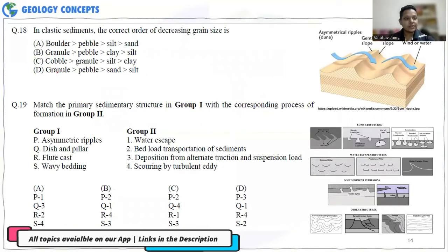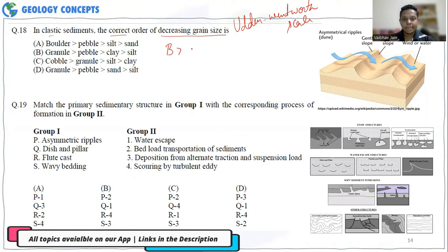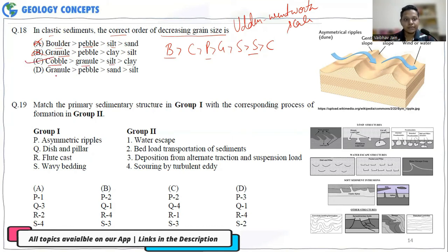The next question asks for the correct order of decreasing grain size in clastic sediments — a direct question from the Udden-Wentworth scale. The correct order from largest to smallest is: boulder, cobble, pebble, granule, sand, silt, clay. Among the options, the sequence cobble → granule → silt → clay is correct — option C.